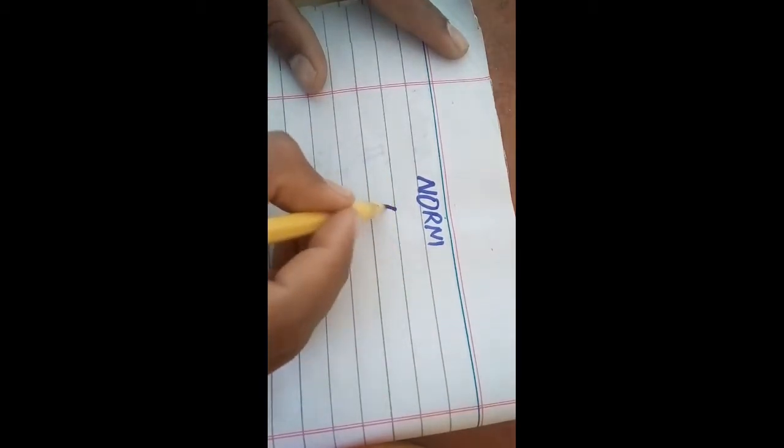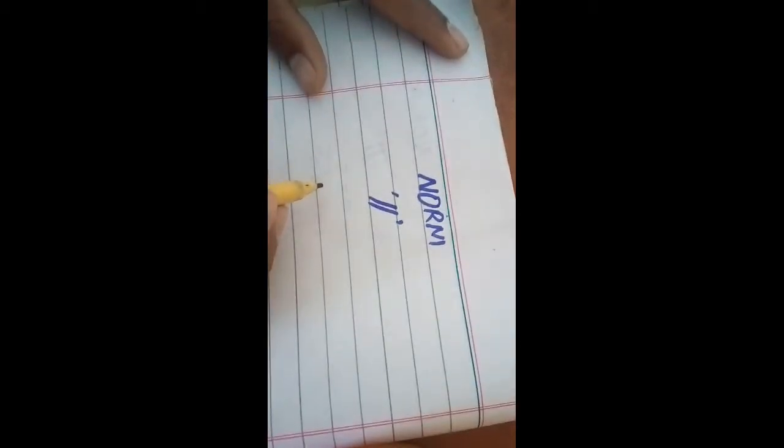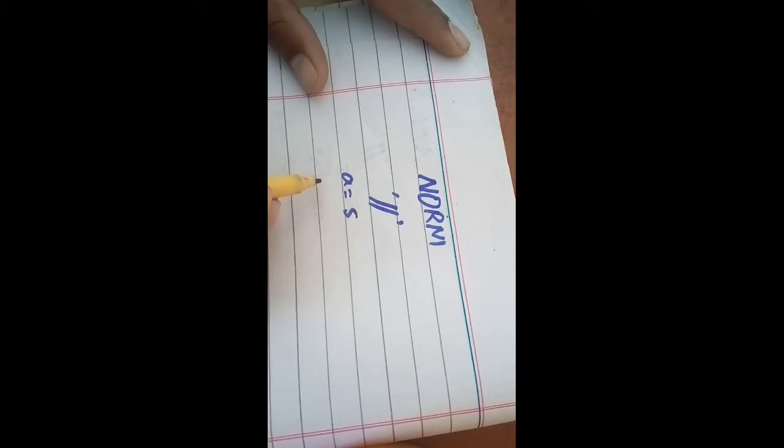This is a symbol that is used for a norm in mathematics. Okay, let us suppose we have a value a is equal to 5 and we have to find a norm of a, then we will write